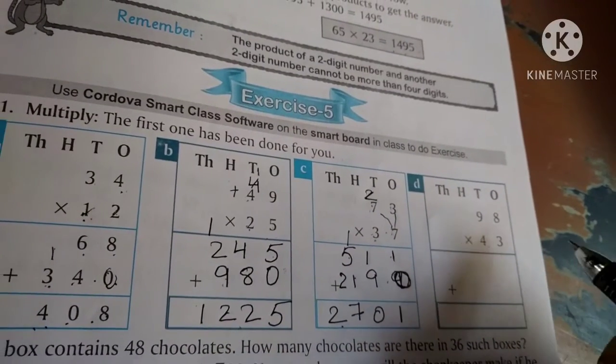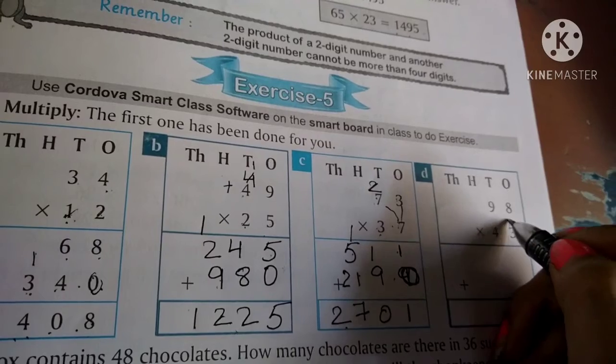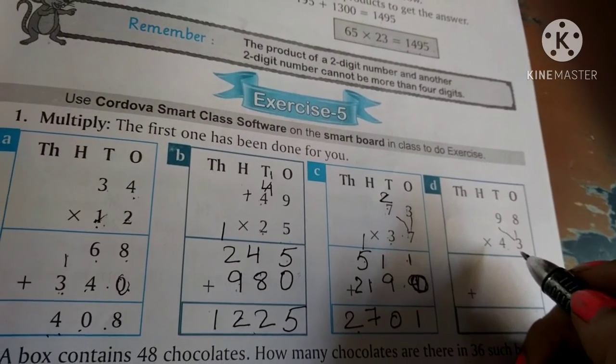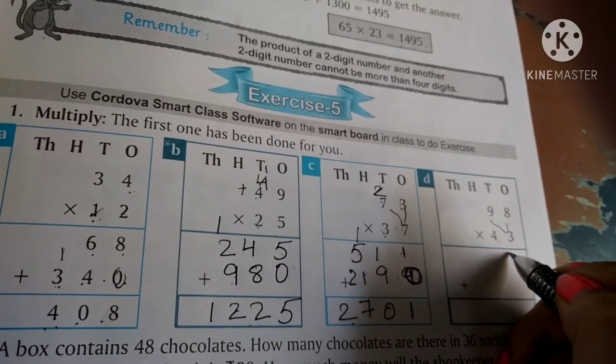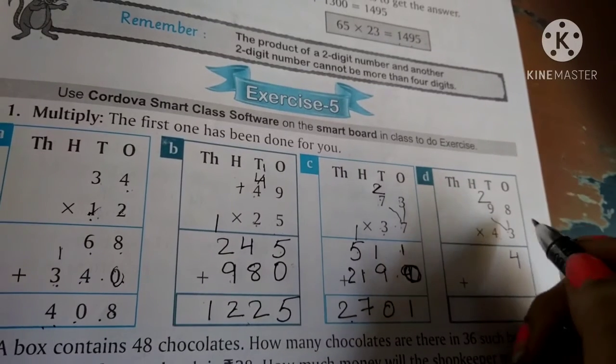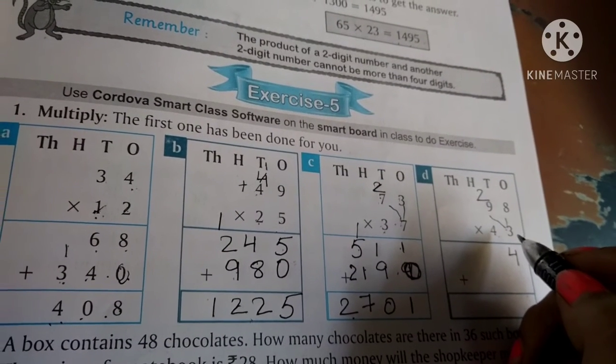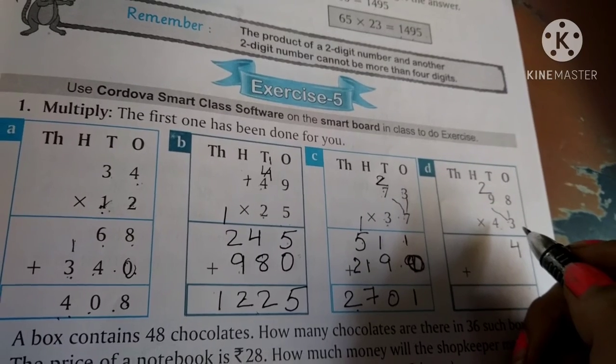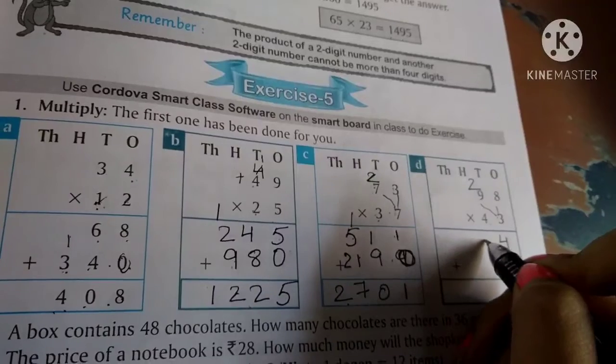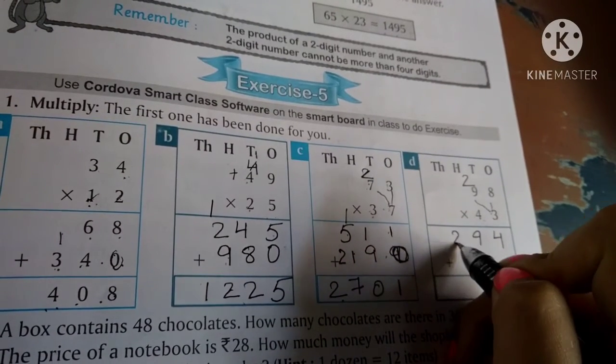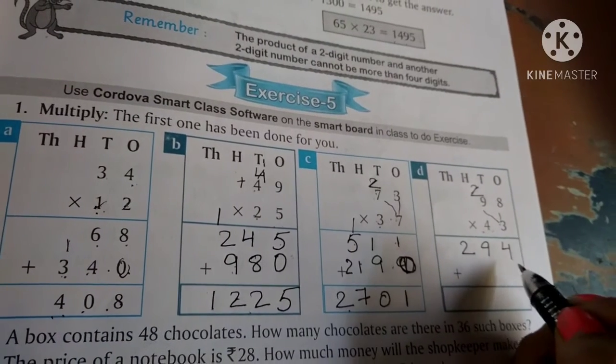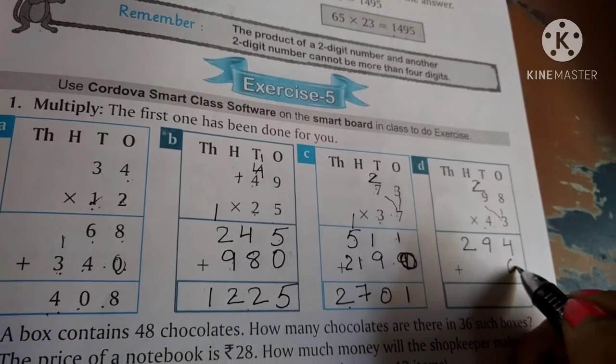Number 4: 98 multiply by 43. First step, multiply by 3: 8 times 3 is 24, write 4 down and carry 2. 9 times 3 is 27, plus 2 equals 29. We get 294 in the first row.